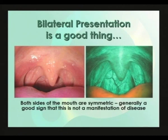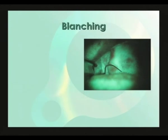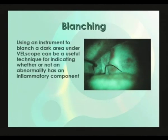This is a very simple example of bilateral presentation — the dark area on the right-hand side of the mouth has an equivalent dark area on the left-hand side. We have already discussed that the anterior tonsillar pillars typically appear dark under VELscope, but even if you didn't know this, the contralateral symmetry is generally a good sign that this is not a manifestation of disease. Using an instrument to blanch a dark area under VELscope can be a useful technique for indicating whether or not an abnormality has an inflammatory component.